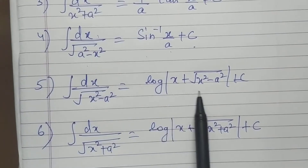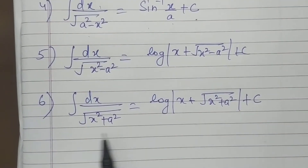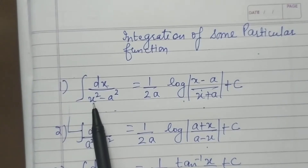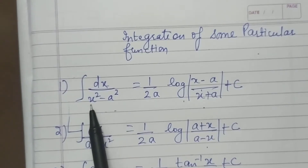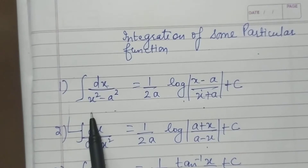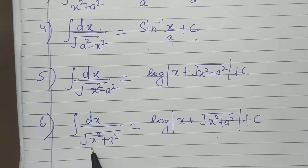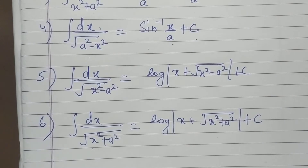If the coefficient of x² is not unity, you must apply the completing the square method. Completing the square means: make the coefficient of x² equal to 1, then take half the coefficient of x, square it, and add and subtract it. These formulas are applied only if the coefficient of x² is unity. So be careful while doing all these questions.